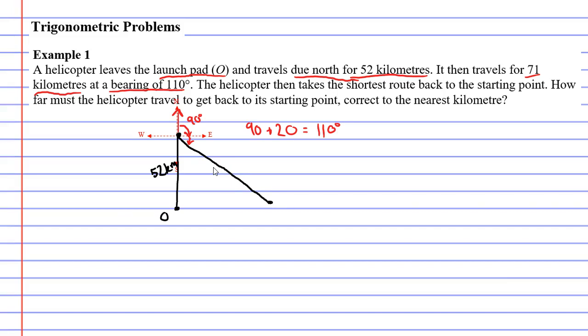Okay, so let's keep reading. It says that the helicopter then takes the shortest route back to the starting point. So if the helicopter is at this point in here, to get back to its starting point the shortest route is a straight line. So it's going to go like so. It's going to travel in this direction - I'll even put an arrow so we can see the direction that the helicopter is traveling.